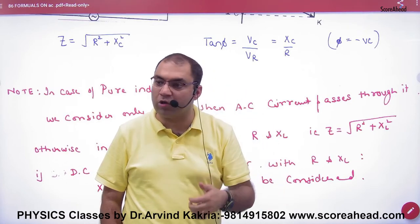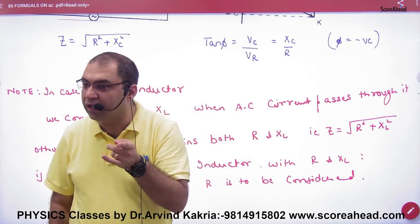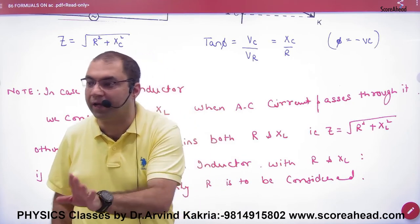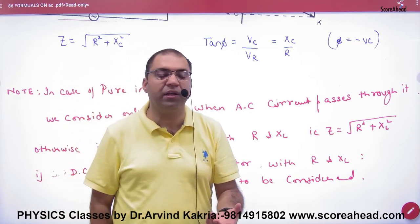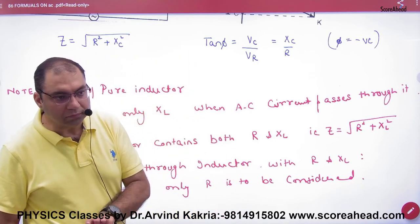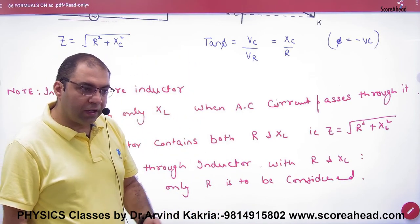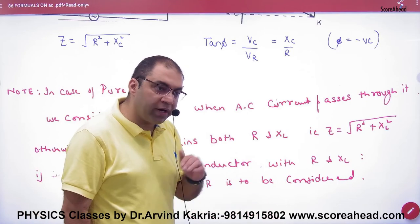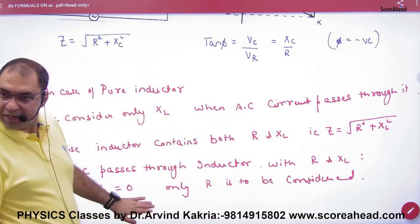Then in the last chapter, when we used solenoid with DC, we had talked about R but we had never talked about XL. Because what happens for XL in DC? Zero. But because this chapter is AC, there will be R and XL for non-pure inductor. Is this point clear?